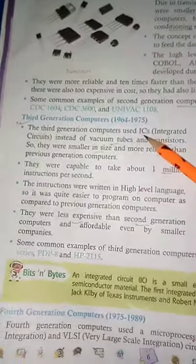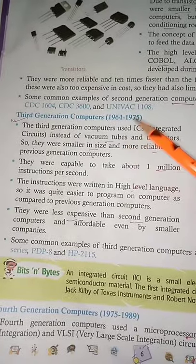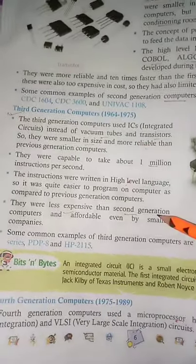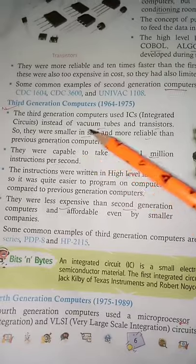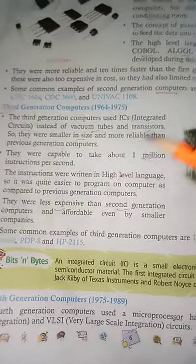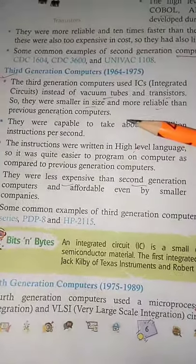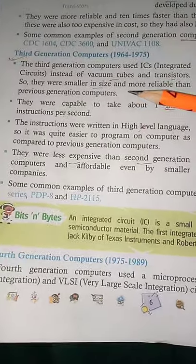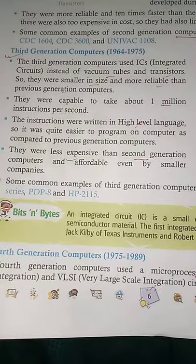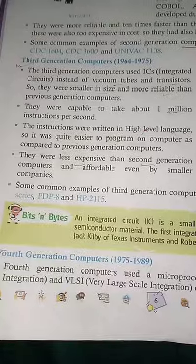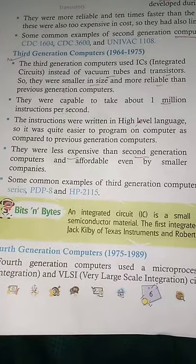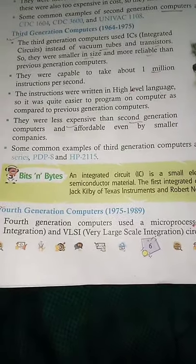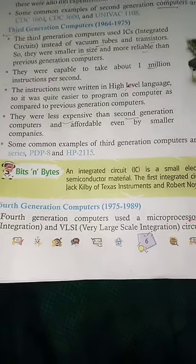Next is third generation of computer। यह third generation के computer 1964 से 1975 तक चले। इसमें integrated circuits को use किया जाता था, और vacuum tubes व transistor की जगह size में बहुत ही small components रहते थे। 1 million instructions per second process होते थे। यह high level language में written होते थे और second generation के according बहुत ही affordable रहते थे।